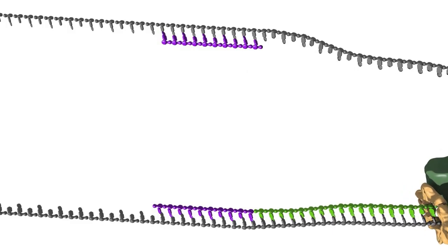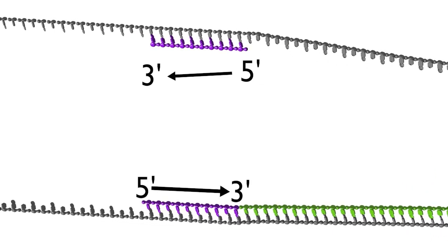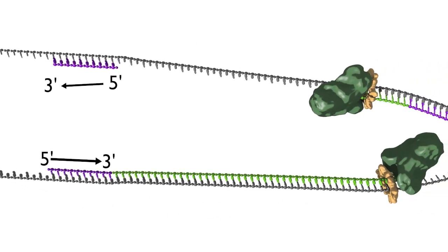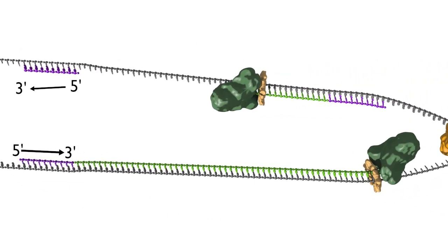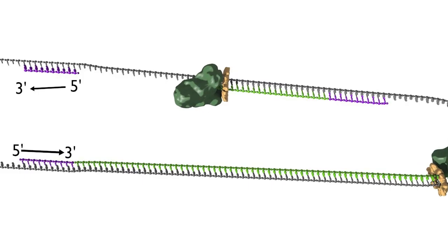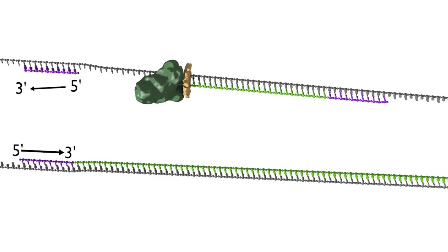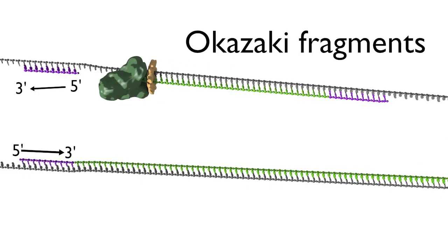The new DNA strand is always made in the 5' to 3' direction. Because the replication of the two DNA strands is coupled, the leading strand is copied continuously, while the lagging strand is copied in short stretches called Okazaki fragments.